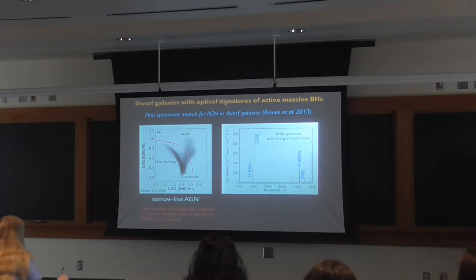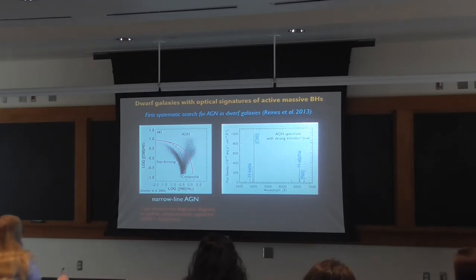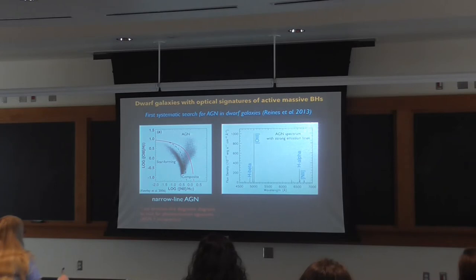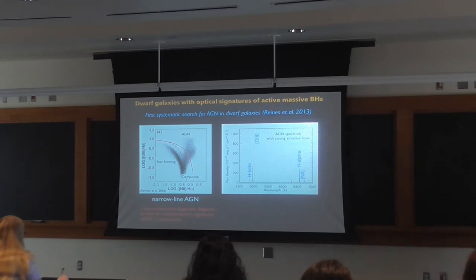The BPT diagram is an emission-line diagnostic diagram that can be used to select galaxies with AGN photoionization signatures. It takes the flux ratio of [OIII] to H-beta versus [NII] to H-alpha. Star-forming galaxies fall on the left branch, while AGN host galaxies have a harder ionizing spectrum and higher [OIII]-to-H-beta ratios. The dashed line shows an empirical separation between star-forming galaxies and objects with an AGN contribution; the red line shows a theoretical maximum starburst line. Anything above the red line is dominated by AGN, and objects between the two lines are called composites.